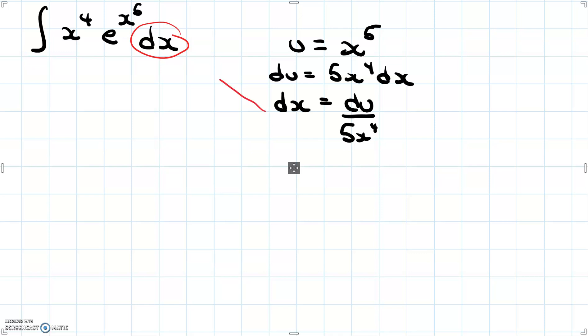So now we're going to take all of this and sub it back in here. When we do that, we get x to the 4 e to the power of u. Because remember we said that x to the 5 is equal to u. So e to the u. And then du divided by 5x to the 4. Now that we have x to the 4 here in the denominator and x to the 4 here in the top part, which would be the numerator, we can cancel them out. So let's go ahead and do that.